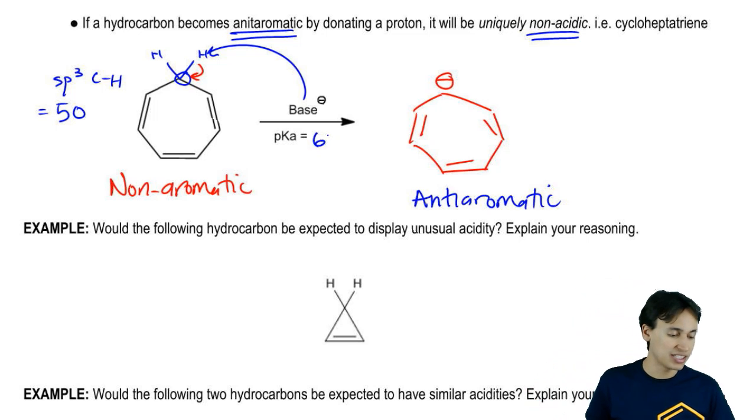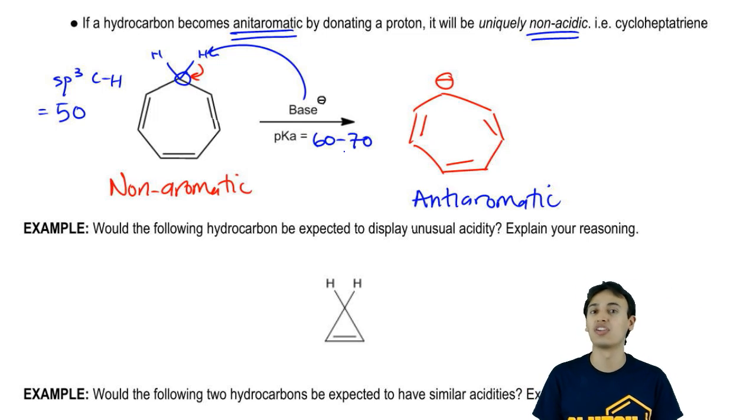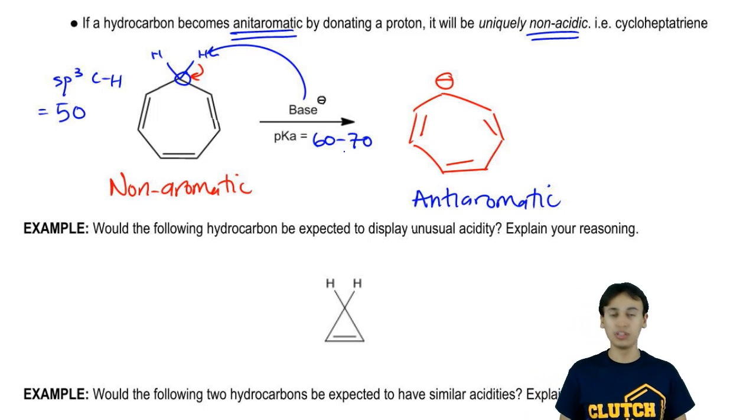Instead of being a pKa of 50, this is going to be a pKa of 60 to 70. It's going to be very, very high. Remember, this is on a log scale, so this is impossibly difficult to remove that proton because that proton would make it anti-aromatic. As you can see, aromatic molecules are not great acids or bases, but the concept of aromaticity can be what is behind the motivating factor behind some really common acids like cyclopentadiene.